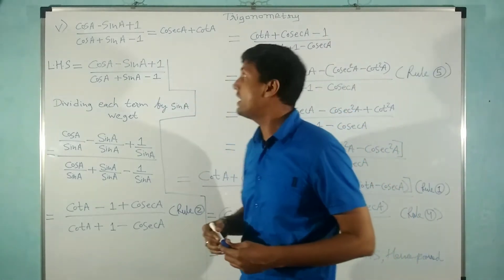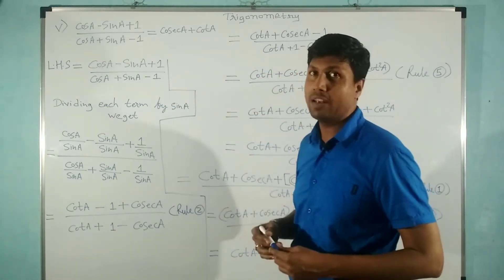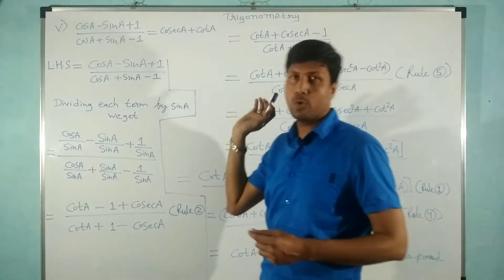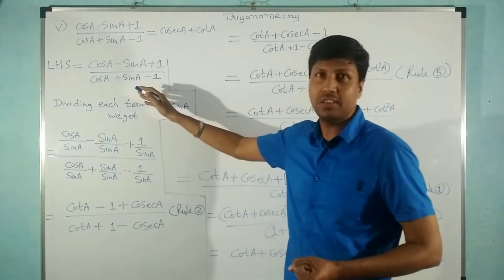The question is: (cos A - sin A + 1) / (cos A + sin A - 1) is equal to cosec A + cot A. That's what we have to prove. First of all, we take the LHS.